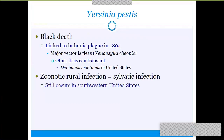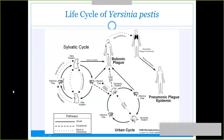Yersinia pestis causes the Black Death or bubonic plague, transmitted via fleas as the vector. Historically it was used by throwing contaminated bodies over enemy lines to spread the plague. We still see Yersinia pestis today in prairie dogs, and a flea from an infected rodent can transmit it to humans as a zoonotic infection. It can cause bubonic plague or pneumonic plague involving the lungs, depending on the route of entry.